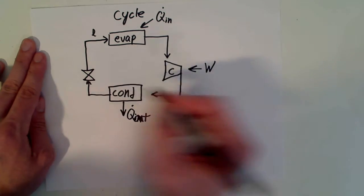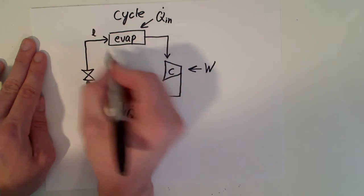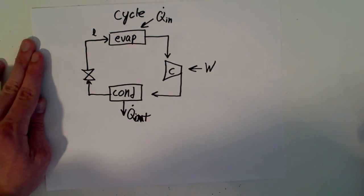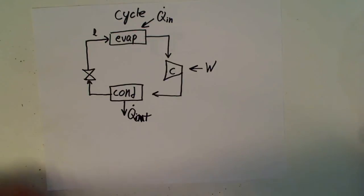And then the expansion valve just expands it, cools it down a little bit so we can get the evaporator to work at maximum efficiency. That's really all that you have to do. That's all really what a cycle is.